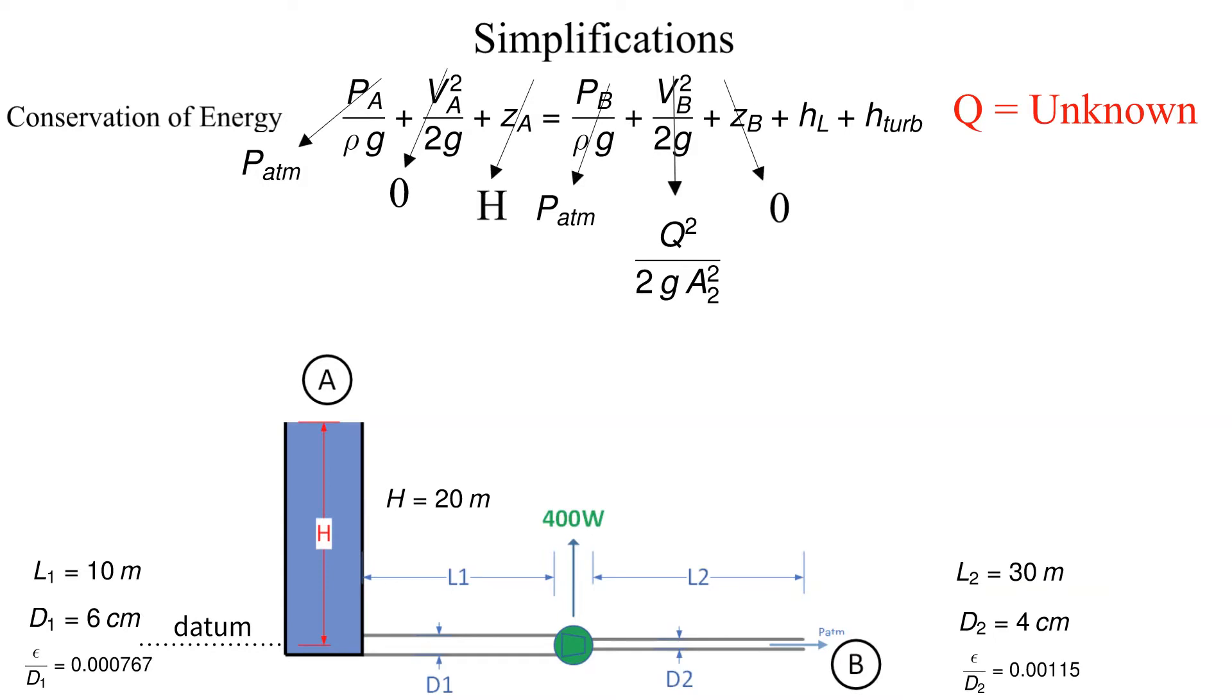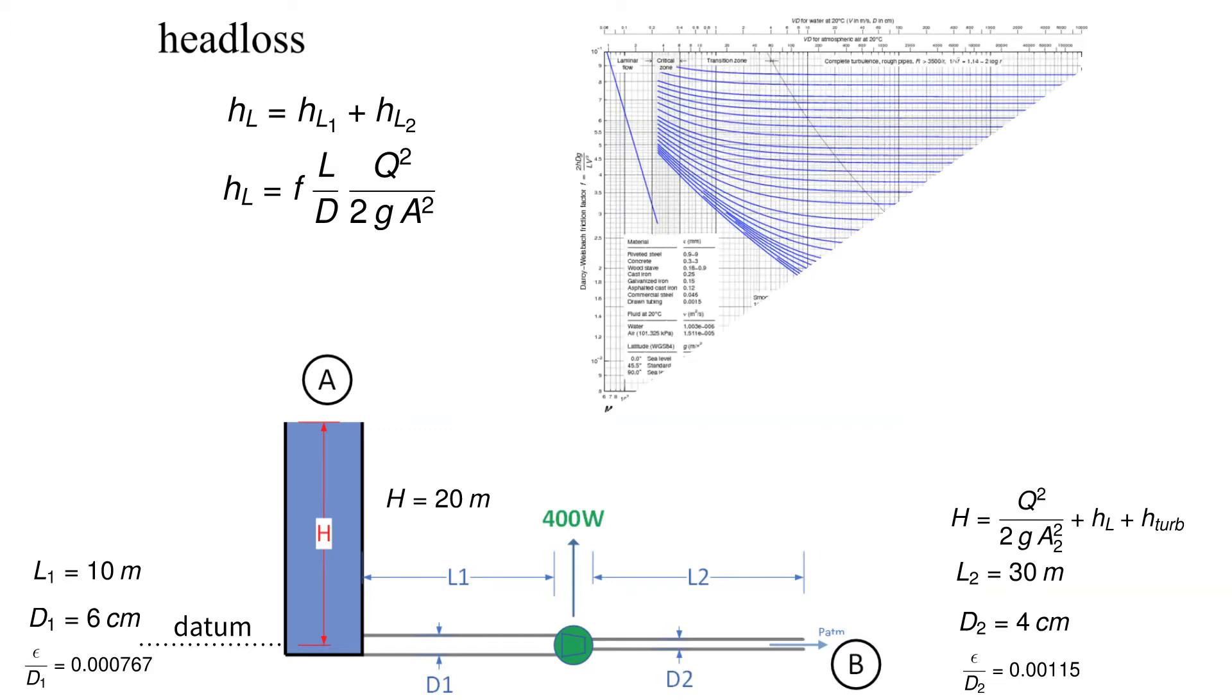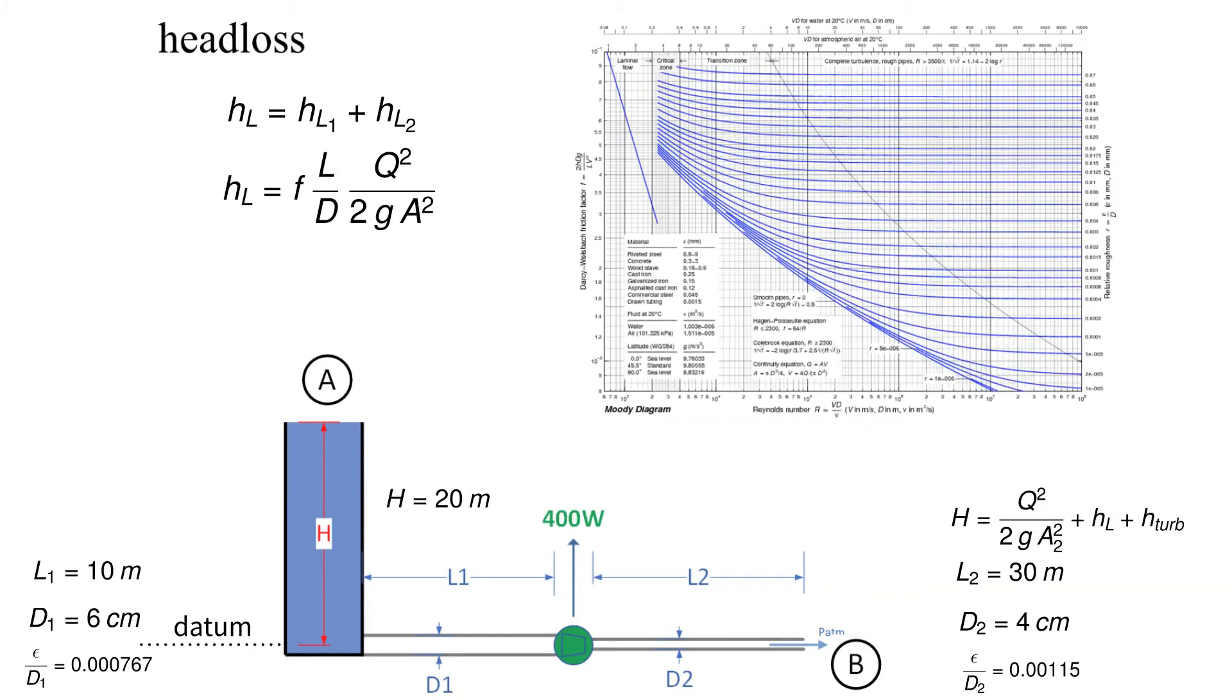Note that the unknown is the volumetric flow rate Q. We need the friction factors for both pipe 1 and pipe 2 to calculate the head loss. We will be using the Moody chart or Moody diagram which relates the friction factor as a function of relative roughness and Reynolds number. To calculate the Reynolds number we need the velocity but the flow is unknown. This problem will require iteration.